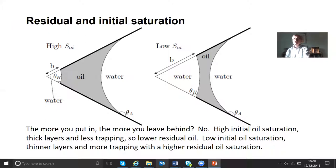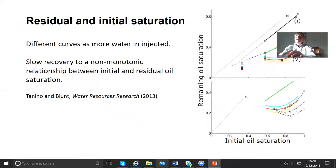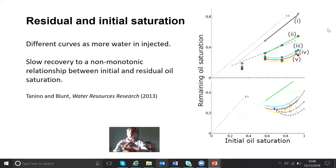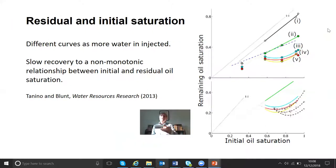There's less oil to trap in the first place, but you're actually trapping more. Do we see this? The answer is yes. Here are some core flood experiments on cores about this size performed on a mixed-wet sample. What's shown at the top are some experiments by Yuki Tanino, who's now at the University of Aberdeen, done in my group at Imperial College. At the bottom is a re-plotting by Yuki of some of Salathiel's classic work in the literature. What we see here is on the y-axis how much oil remains in the rock.